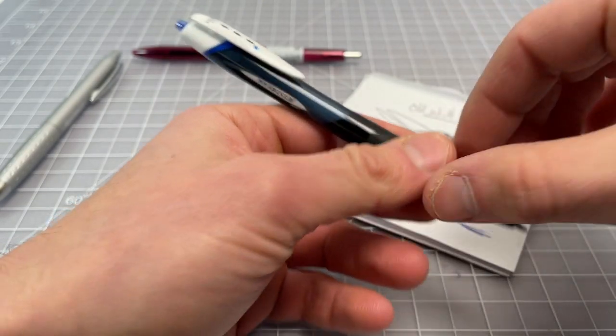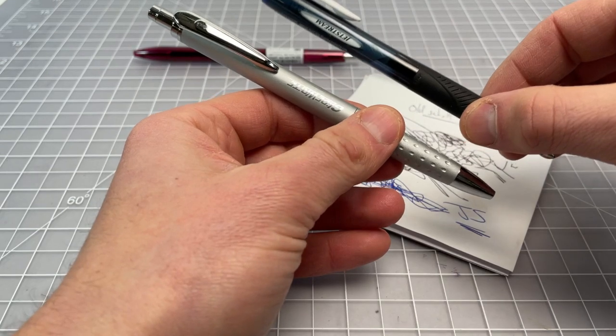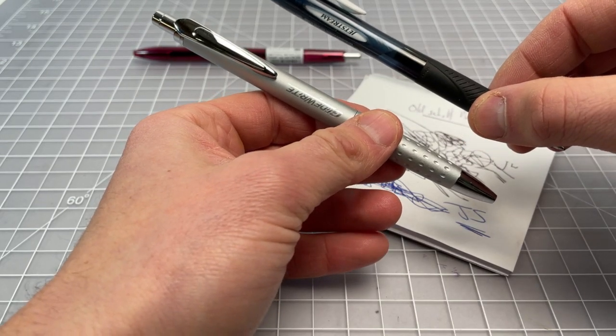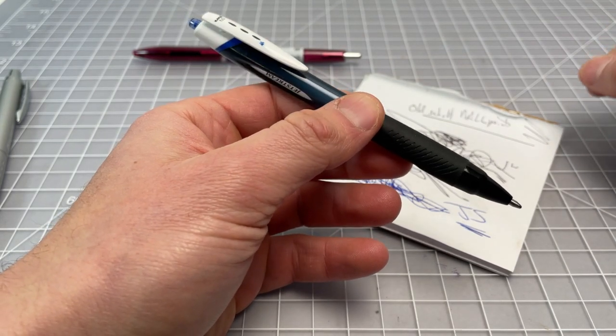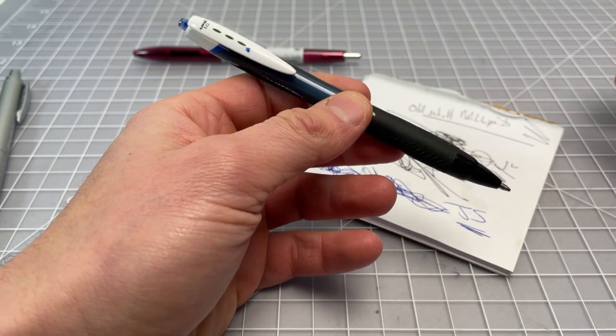It is a match for the Gliderite, which is also 1.0 millimeter, but the Jetstream is typically seen in a 0.5 or 0.7 millimeter ink. So it's not maybe what you'd expect from a Jetstream.